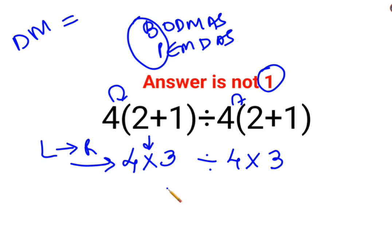So we have 4 multiplied by 3 which is 12 divided by 4 multiplied by 3. So 12 divided by 4 is the next operation which needs to be done, which is 3 multiplied by 3. So answer for this question is supposed to be 9.